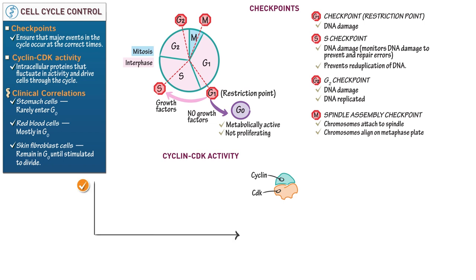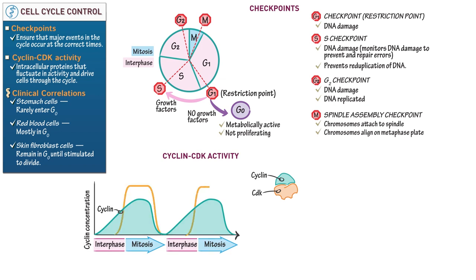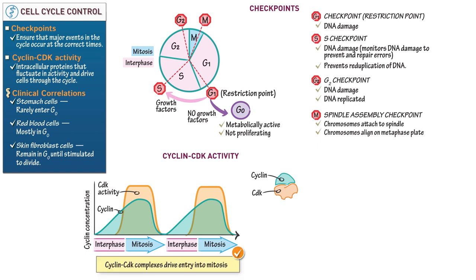Now draw a graph to illustrate cyclin and CDK activity during the cell cycle. The x-axis represents multiple cell cycles, each comprising interphase and mitosis. The y-axis measures the concentration of cyclin. Cyclin concentrations rise gradually throughout interphase and peak during mitosis, then drop to zero at the onset of the following interphase — cyclins are so named because their concentration varies cyclically. CDK activity peaks whenever cyclin concentration peaks: as cyclin concentration increases, the number of active cyclin-CDK complexes increases. Cyclin-CDK complexes drive entry into mitosis.